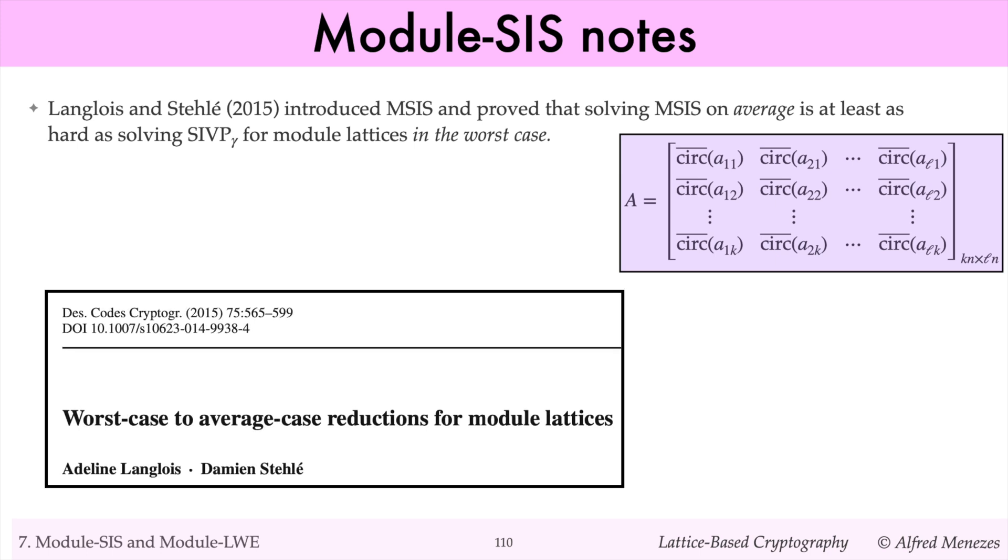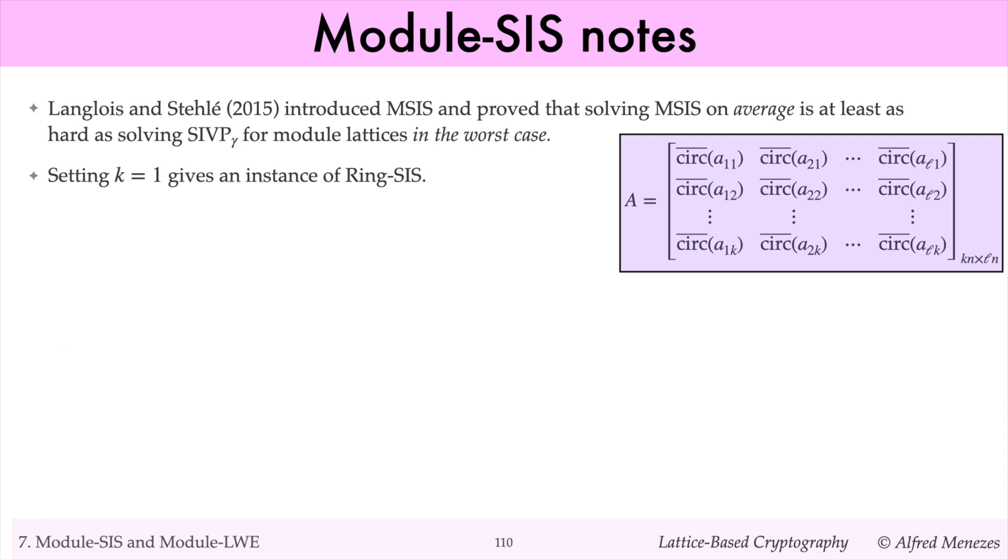Langlois and Stehlé introduced module SIS in 2015 and proved that solving module SIS on average is at least as hard as solving approx SIVP for module lattices in the worst case. As with the worst case to average case reduction for SIS, this guarantee is an asymptotic one. Notice that ring SIS is a special case of module SIS with k equals 1, so using polynomials instead of vectors of polynomials.